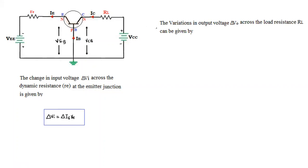The variation in output voltage delta_v0 across the load resistance RL is also derived using Ohm's law. The change in output voltage equals the change in output current delta_ic multiplied by RL. So: delta_v0 = delta_ic × RL. Here ic is the output current and ie is the input current.